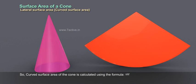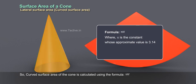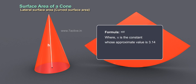Curved surface area of the cone is calculated using the formula πRL, where π is the constant whose approximate value is 3.14. L is equal to slant height of the cone.